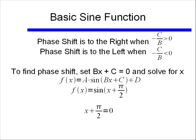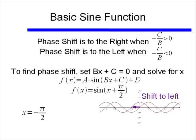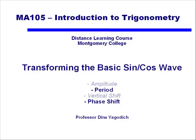You can either memorize the phase shift direction using −c/b, or set bx + c = 0 and solve for x to find the shift amount. And there we've finished transforming our basic sine and cosine wave, covering both period transformation and phase shift.